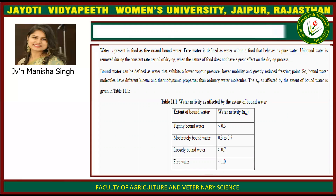Water is present in food as free or bound water. Free water is defined as water within the food that behaves as pure water. Unbound water is removed during the constant rate period of drying, when the nature of food does not have a great effect on the drying process. Bound water can be defined as water that exhibits lower vapor pressure, lower mobility, and greatly reduced freezing point. Bound water molecules have different kinetic and thermodynamic properties than ordinary water molecules.